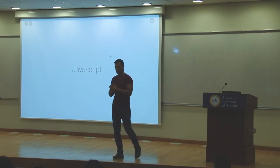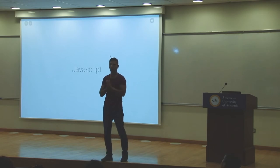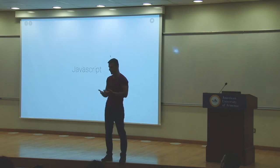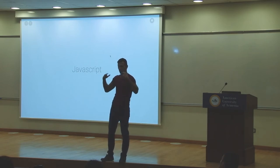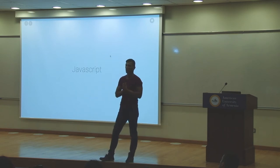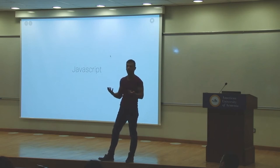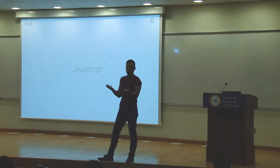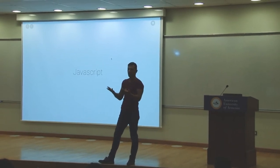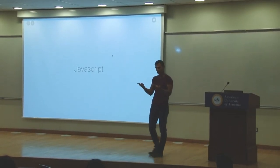Why is it called JavaScript? When Netscape — a very old browser, way before Chrome — decided to implement a programming language in its browser, they were partnered with Sun Microsystems, who had a programming language called Java. Basically as a marketing scheme, they decided to call this new language JavaScript. The two languages have nothing in common.